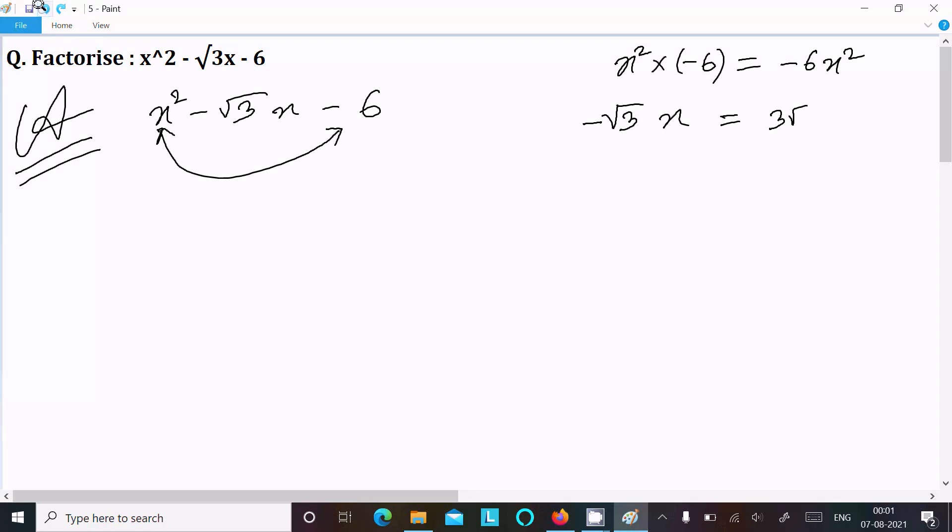We can write -2√3x + √3x. If you subtract it equals -√3x. Now multiply -2√3x into √3x, this comes -6x². So 6x² and 6x² are equal, then we can take this combination.